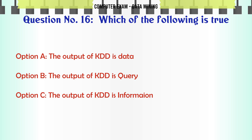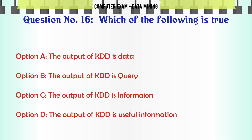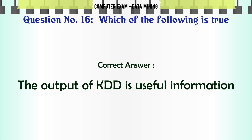Which of the following is true? A. The output of KDD is data. B. The output of KDD is query. C. The output of KDD is information. D. The output of KDD is useful information. The correct answer is: The output of KDD is useful information.